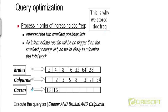In this particular example, the two smallest postings lists are Caesar, which is the smallest, and then Brutus. So we will execute the overall query as Caesar AND Brutus, and then AND the result with Calpurnia.